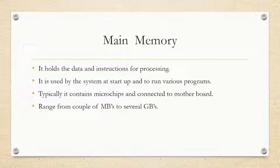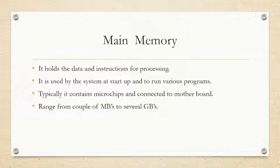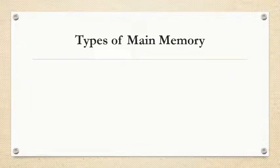Computer memory can range from a couple of megabytes to several gigabytes. Whenever a user has to load any kind of software from a storage medium, it is first loaded into main memory and then executed or processed. The types of main memory are IPM, RAM, and ROM.